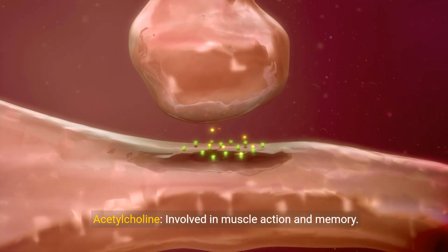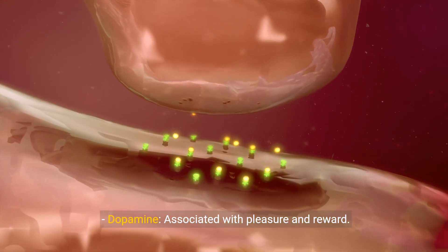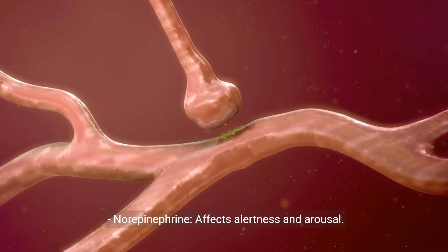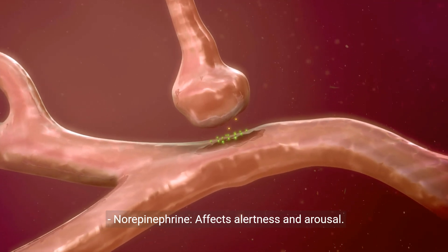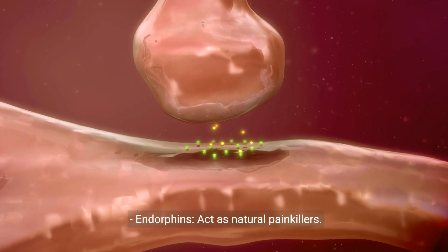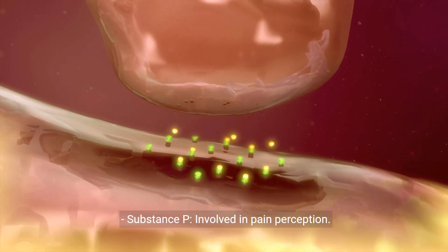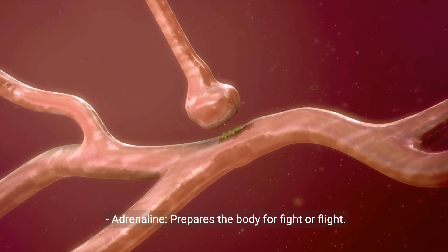Acetylcholine is involved in muscle action and memory. Dopamine is associated with pleasure and reward. Norepinephrine affects alertness and arousal. Serotonin regulates mood and sleep. Endorphins act as natural painkillers. Substance P is involved in pain perception. Adrenaline prepares the body for fight or flight.